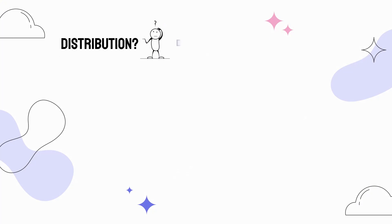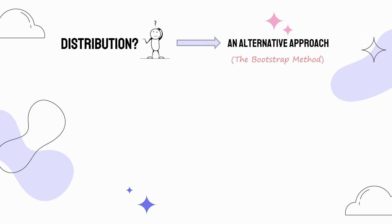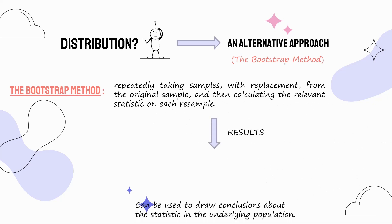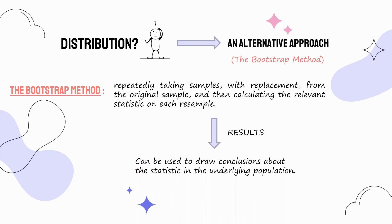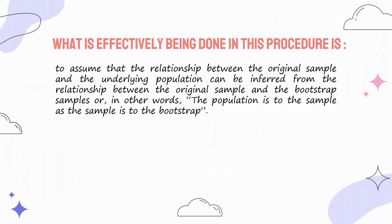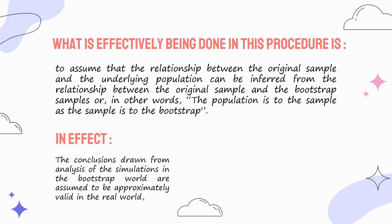However, where the distribution is not known, an alternative approach is needed. One such approach that has been shown to work well in certain circumstances is the bootstrap method. This involves repeatedly taking samples with replacement from the original sample and then calculating the relevant statistic on each resample. The results across all of these samples can then be used to draw conclusions about the statistic in the underlying population. What is effectively being done is to assume that the relationship between the original sample and the underlying population can be inferred from the relationship between the original sample and the bootstrap samples — in other words, the population is to the sample as the sample is to the bootstrap. The conclusions drawn from analysis of the simulations in the bootstrap world are assumed to be approximately valid in the real world, which is sometimes referred to as the plug-in principle.